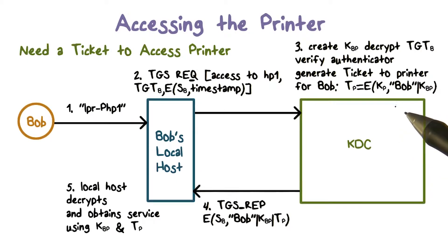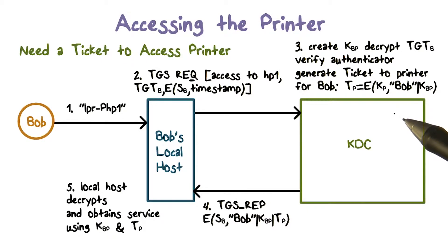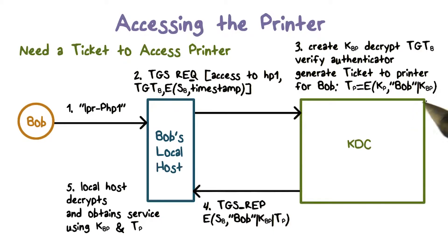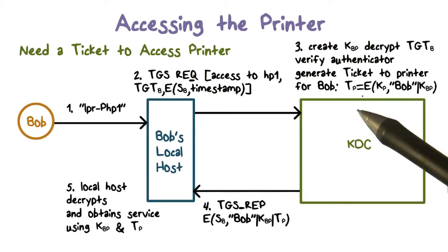This proves that the sender is Bob because only Bob has a key SB that can encrypt the current timestamp properly. The KDC then generates a ticket for Bob to communicate with the printer. This ticket contains a session key KBP and Bob's ID, and is encrypted using the printer's master key.